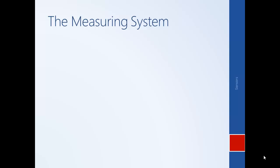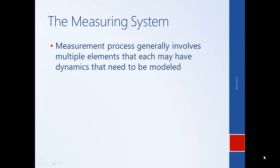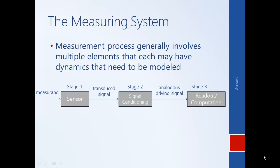Sensors are actually part of a larger measurement system with different elements: the sensor itself, signal conditioning, and readout or computation. Each element of this measuring system may have dynamics and may introduce error, and how these affect the larger control system needs to be understood. The first stage is the sensor itself — it's dynamic and may not react instantaneously. The output of the sensor may take time to react when the quantity being measured changes, so we may need to model the sensor as a transfer function or differential equation to understand how its dynamics affect the larger control system.